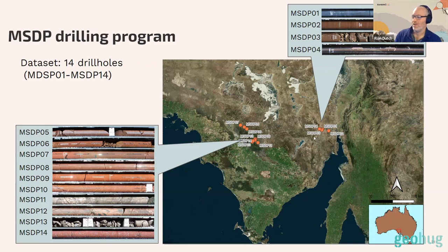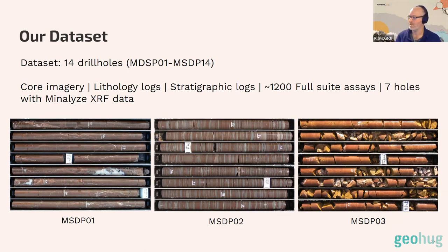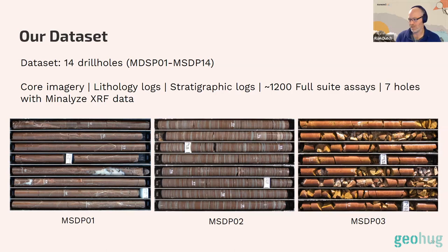These 14 holes are spatially distributed, which is potentially a problem for modeling. The pre-competitive data set includes about 1,200 full-suite lithogeochemistry samples — cherry-picked across the holes — core imagery for all holes, mythology and stratigraphic logs from the South Australian Geological Survey, and seven holes have continuous Minalyze XRF data. The challenge I set myself was to demonstrate the power of integrating geochemistry with imagery, potentially by modeling stratigraphy.